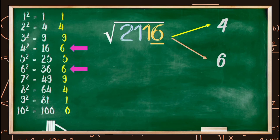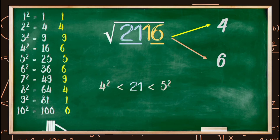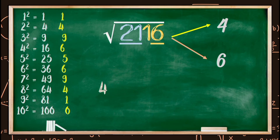Step three: consider the second group, which is 21. Since 21 comes in between the squares of 4 and 5 — that is, 21 is greater than the square of 4 which is 16, and 21 is less than the square of 5 which is 25 — we can definitely say that the tens digit of the square root of 2116 will be 4. So far, the square root will be either 44 or 46.